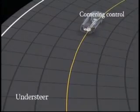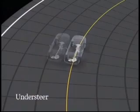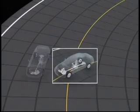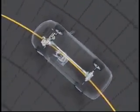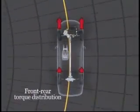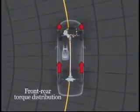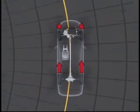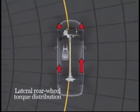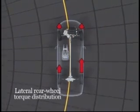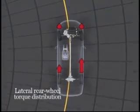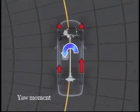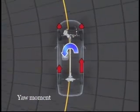Accelerating through a curve can lead to understeer, causing the vehicle to drift wide of the driver's intended line. In this situation, SHAWD distributes more torque than usual to the rear wheels. Further, extra torque is distributed to the rear wheel on the outside of the turn. Directing more torque to the outside wheel generates inward yaw moment, which helps prevent understeer.